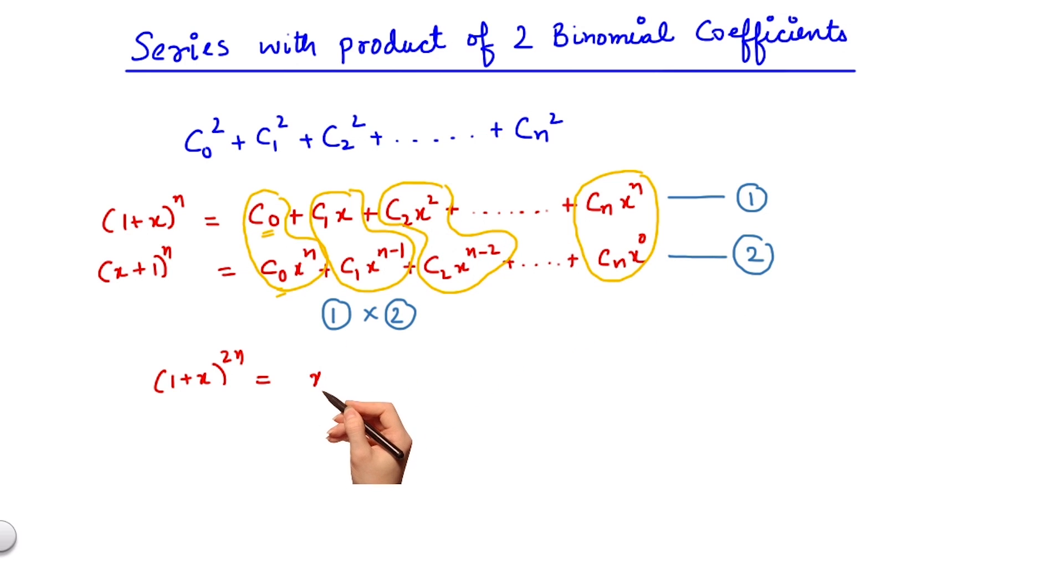So it is clear that the coefficient of x to the power n would be c0 square plus c1 square until cn square, and then we would have other powers of x and their coefficients.